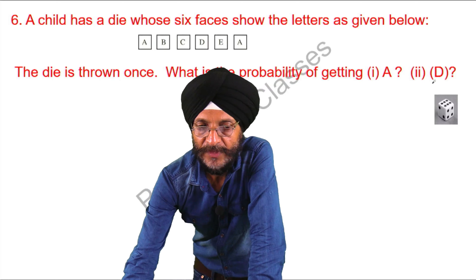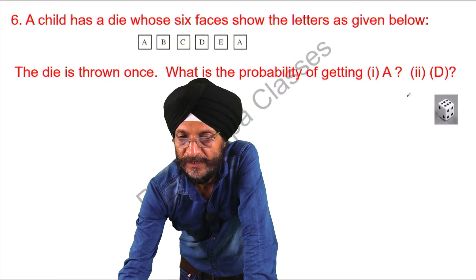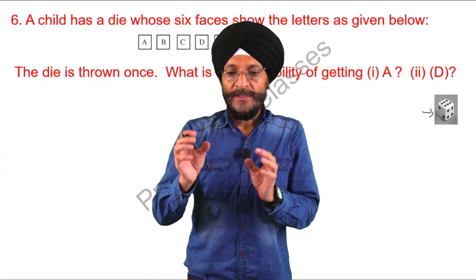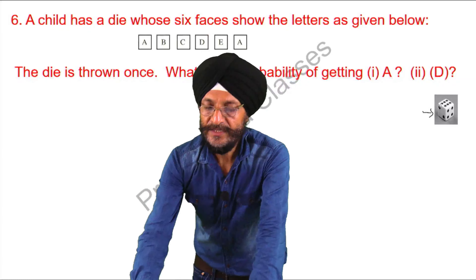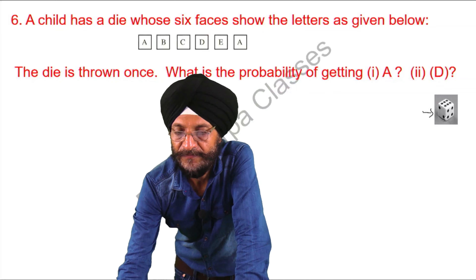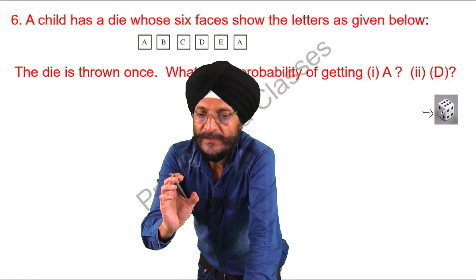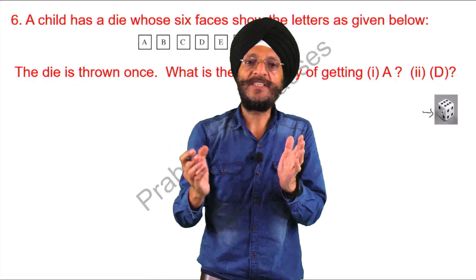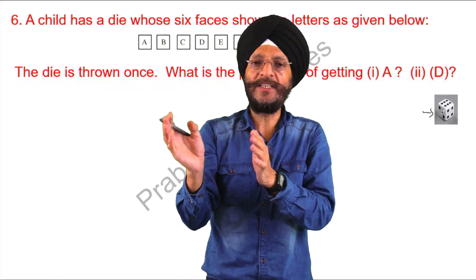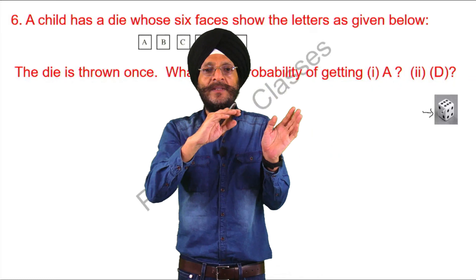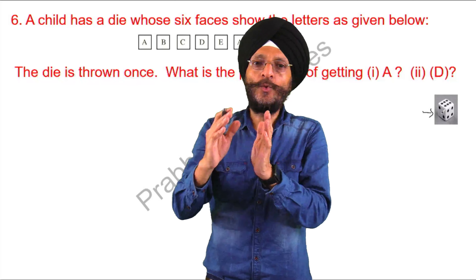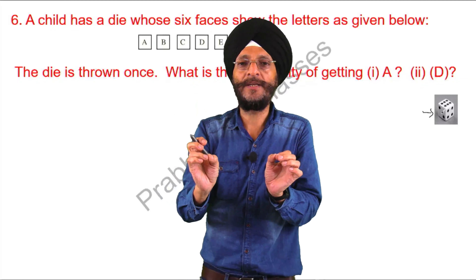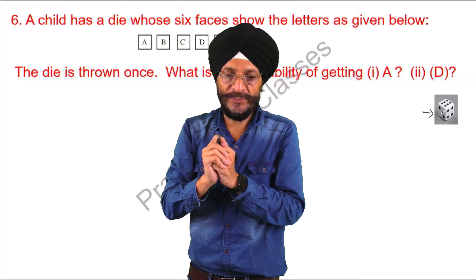What is the meaning of 'die'? If it is a single piece, then it is known as a die. When there are more than one piece, they are known as dice. There is no difference between die and dice — the difference is only singular and plural. Die is the singular word and dice is the plural of the same.